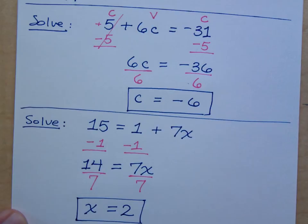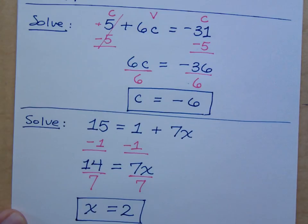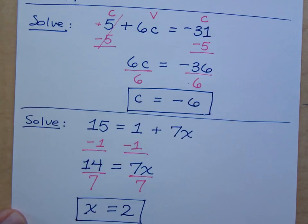Questions about that one? It's just like all the other problems, right? You have to get your variable term on one side and your constants on the other. Then, if necessary — if you don't have just a plain 1x — you divide by the coefficient, and you're done.